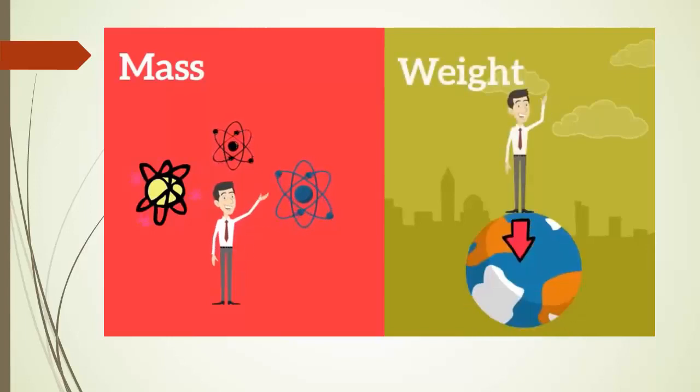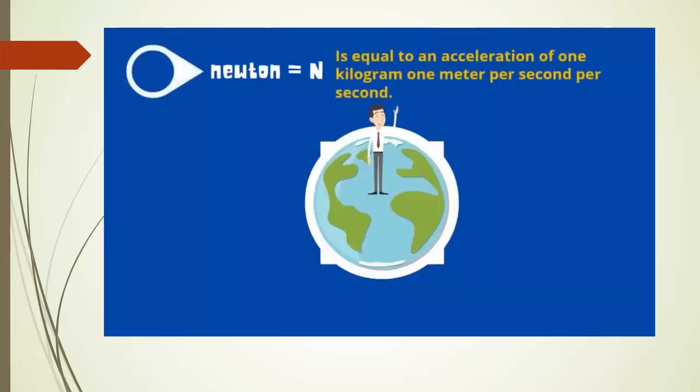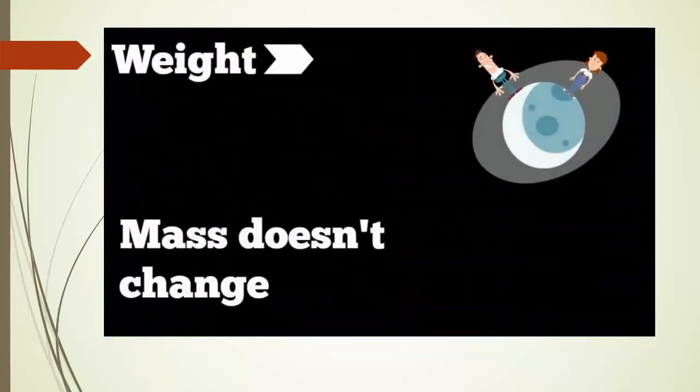We will first see what is mass. Mass is the quantity of matter contained in a body, whereas weight of a body is the force that the earth or a heavenly body exerts on the body. Mass is related to molecules whereas weight is related to force of attraction between two bodies. So both are identical to each other, but they are different as well.